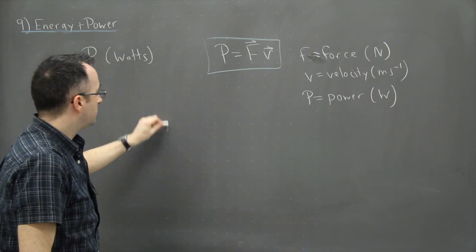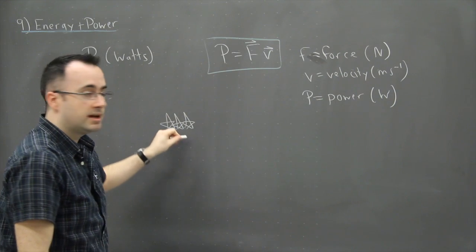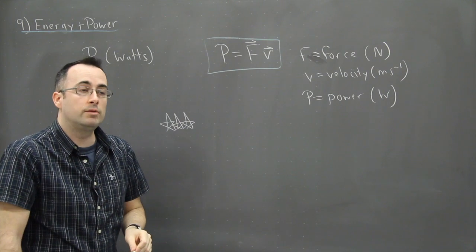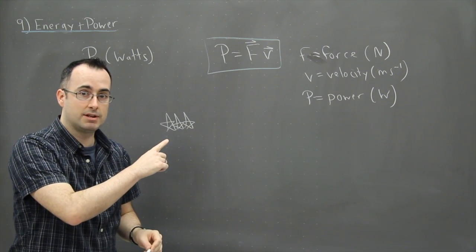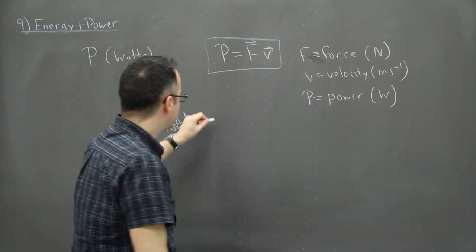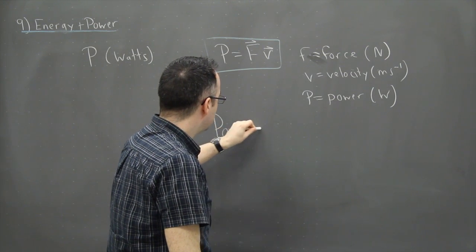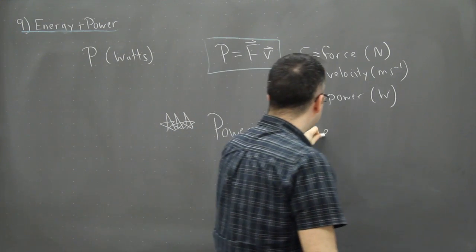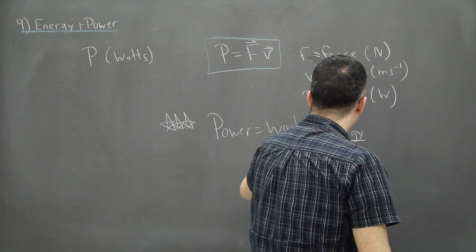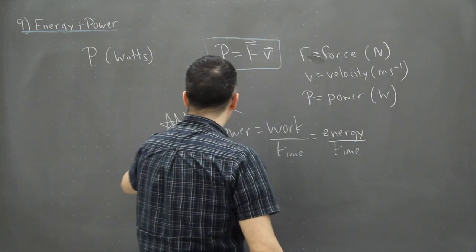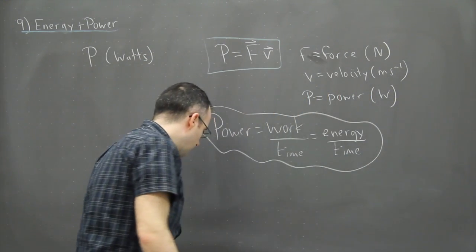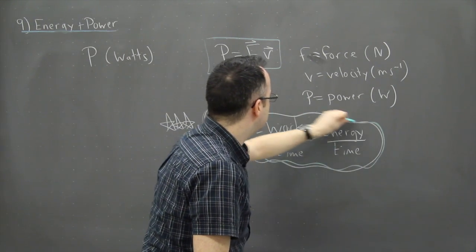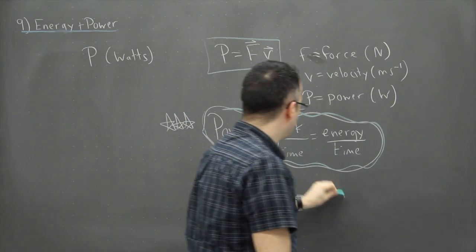A much more important equation — this one is not in your data booklet — is one of the few I'd strongly recommend memorizing. In fact, if you're only going to memorize one equation, this is the one: power is equal to work over time. In other words, it's energy over time. This equation is so useful, even though it's not in your data booklet.